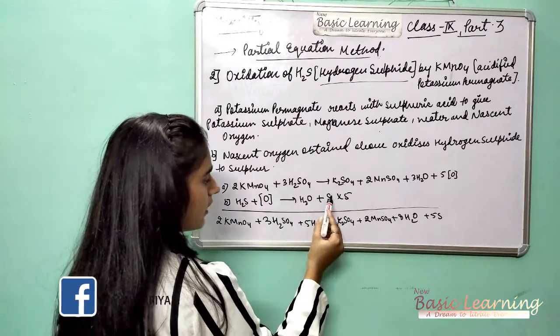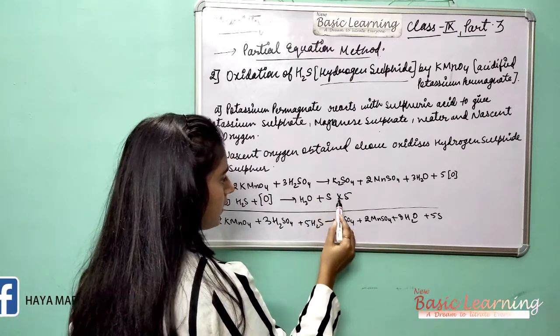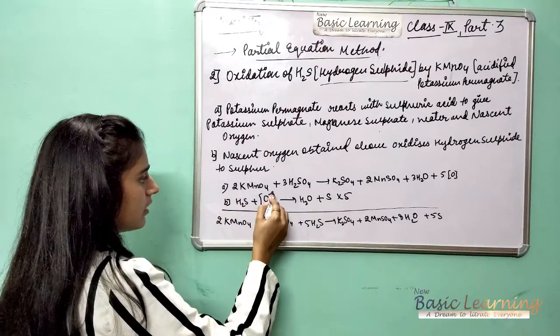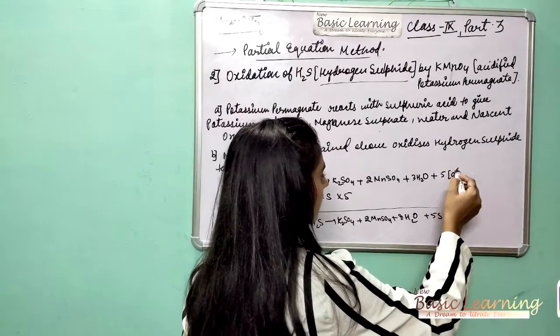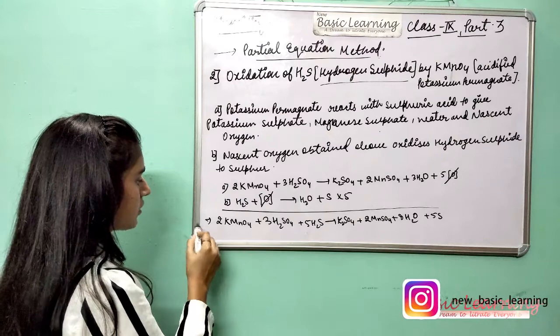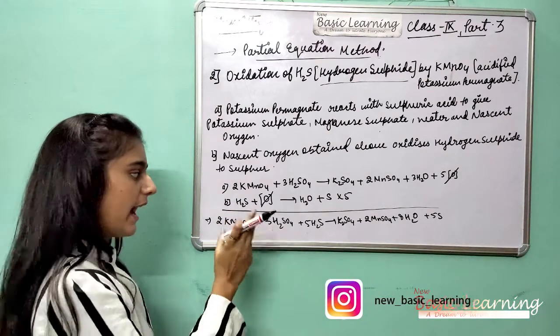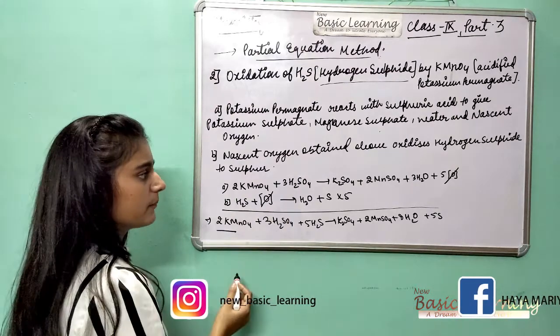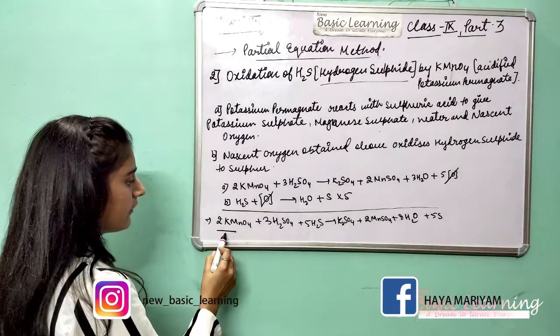Now we will cancel out what is common. This is cancelled by nascent oxygen. Now we will write the chemical equation. In the last, we will add all which is left and we will cancel the common part.